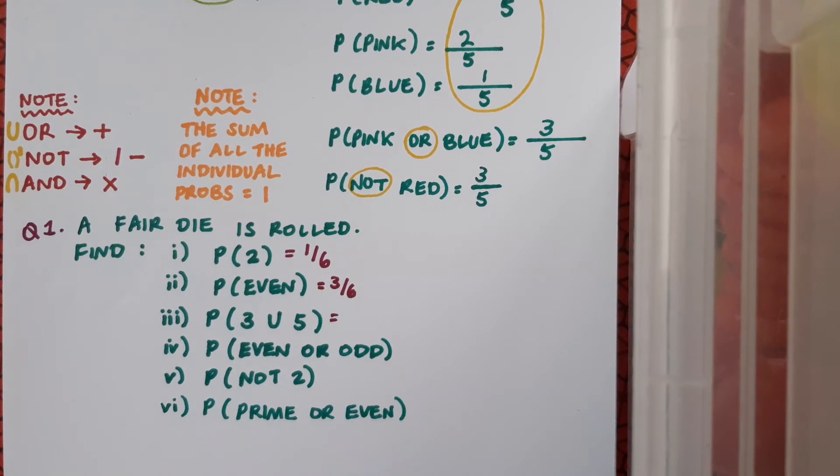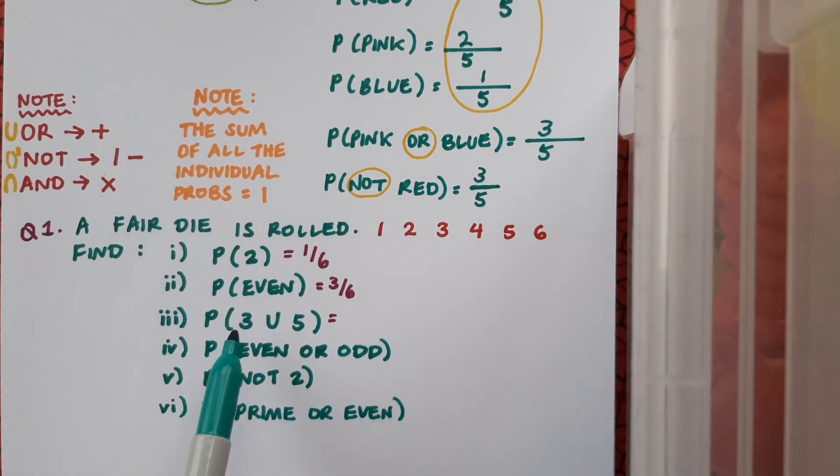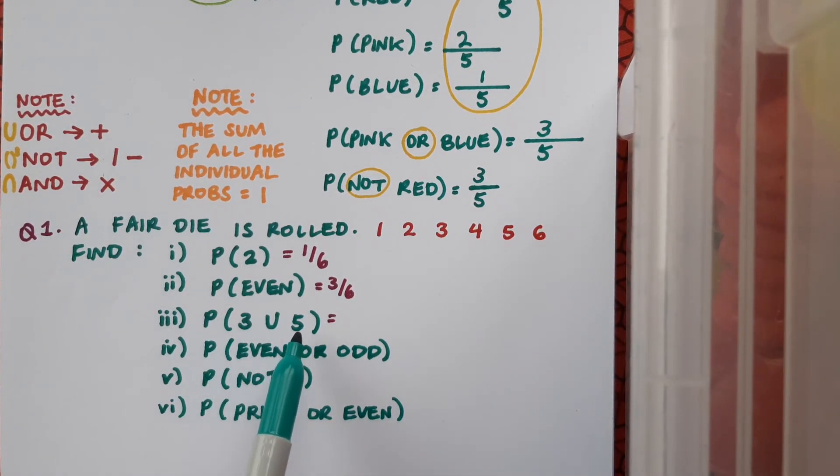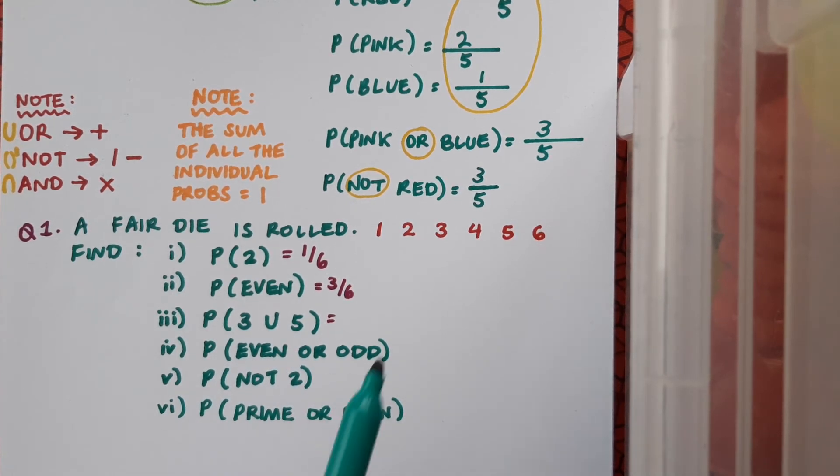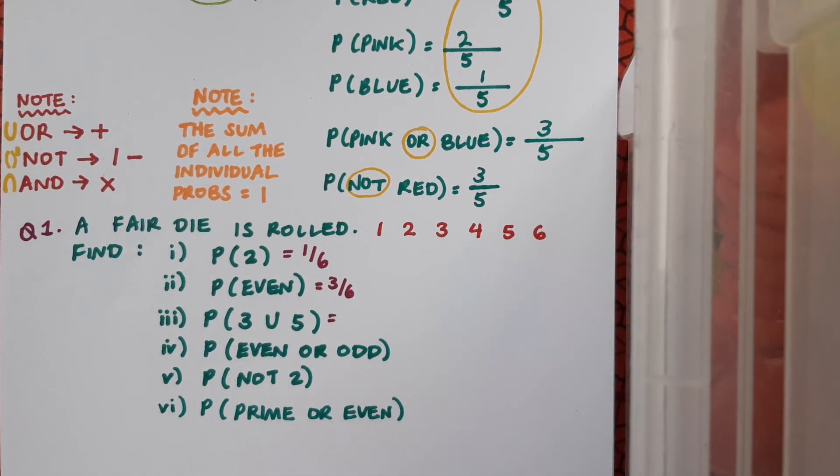In part three we're asked to find the probability of three union five. This means three or five, and if we look at these individually the probability is one over six and one over six, so overall it's two over six. We can see if we list out all the possible results here that there are two favorable options—the three and the five—and there are six options in total.